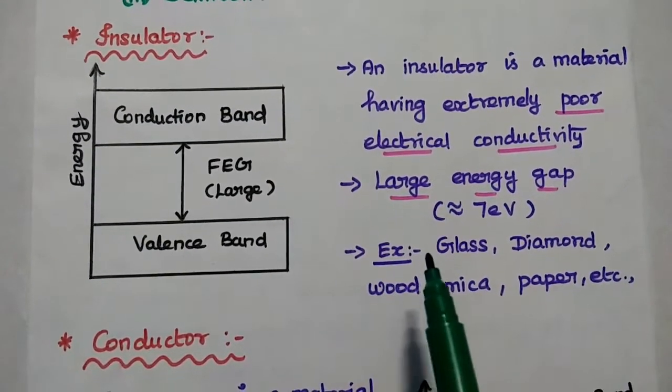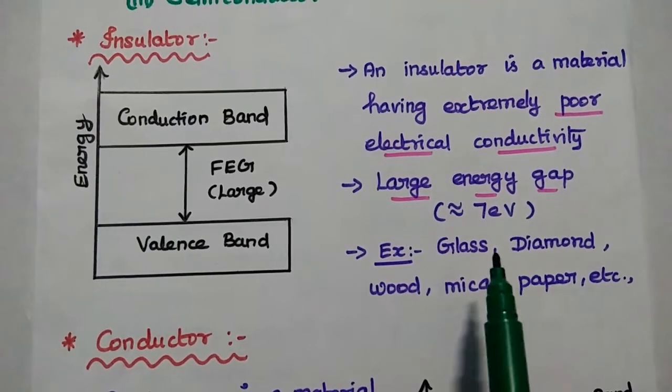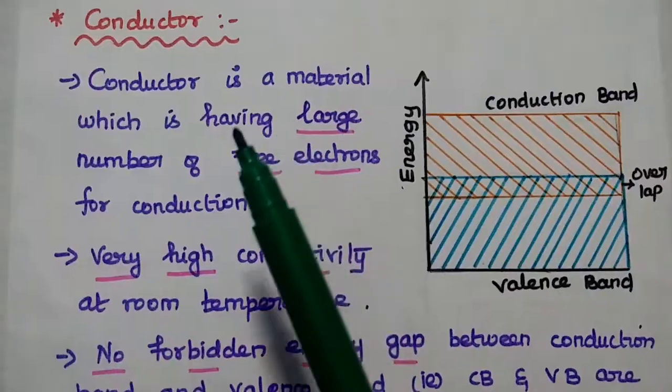Examples of insulators are glass, diamond, wood, mica, and paper.